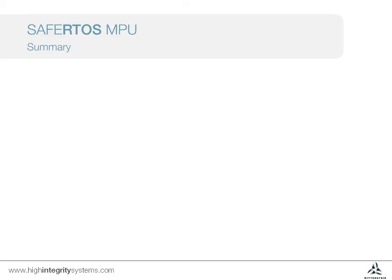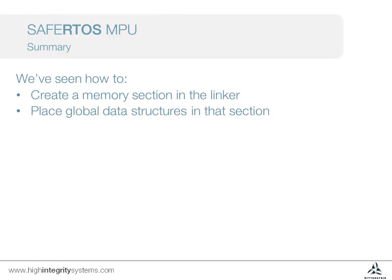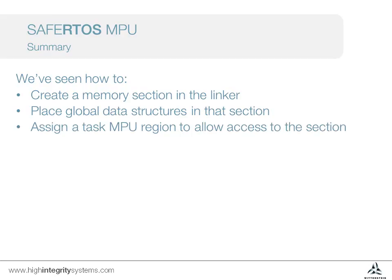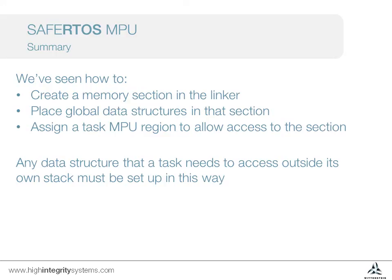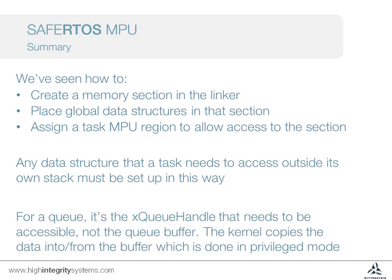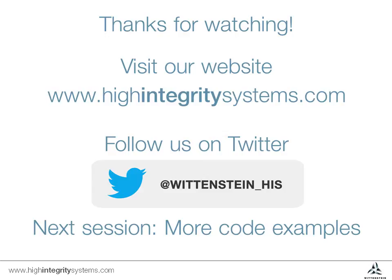This video has covered quite a bit of ground. We've seen how to create a memory section in the linker script, which allows us to place global data structures at a known location. We've also seen how to assign a task MPU region to cover this section of memory. Every data structure that an unprivileged task needs to access, and that isn't contained within the task stack, will need to be set up in this manner. Multiple structures can be grouped together and placed in the same region. If the tasks are passing data into queues, it's the queue handle that needs to be accessed by the task, not the queue buffer. The kernel handles the copying of data into or from the buffer, and the kernel always operates in privileged mode. To help put the code snippets in context, why not download one of our demo applications from the Wittenstein website? In the next video in this series, we'll look at a different approach to allowing tasks to access items such as queue handles without using global variables.